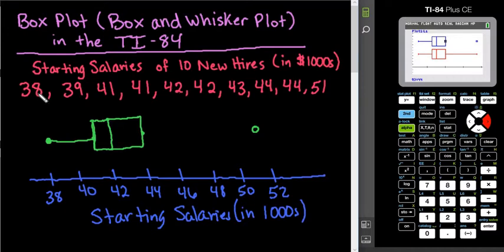So if you're looking at this, even though there is a range from 38,000 to 51,000, majority of your information, 50% of your information is going to be in between the 41 to 44,000 range.